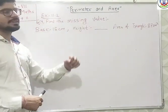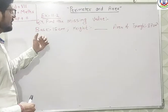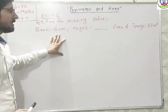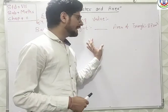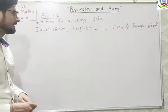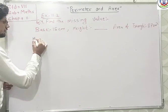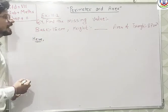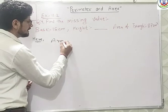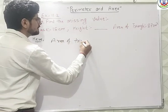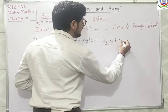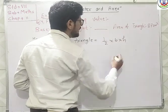We have to find the missing values. We have given the base that is 15cm, then we have to find the height and we have given the area of the triangle.